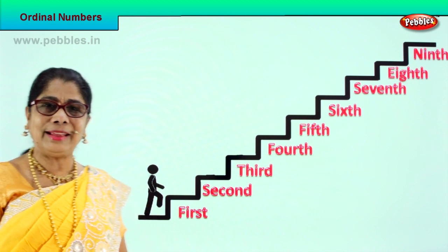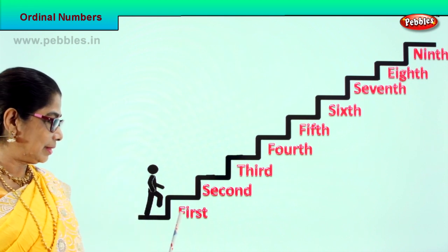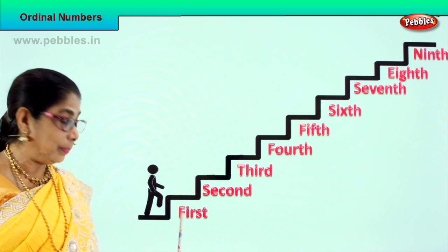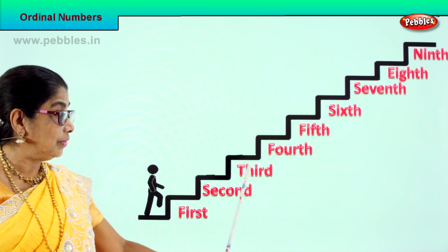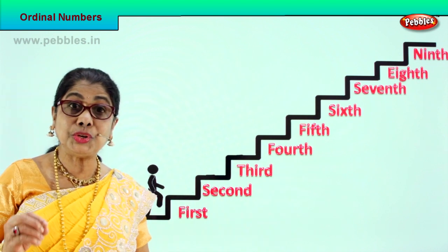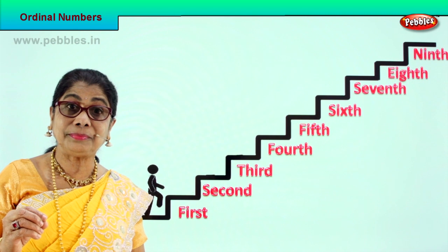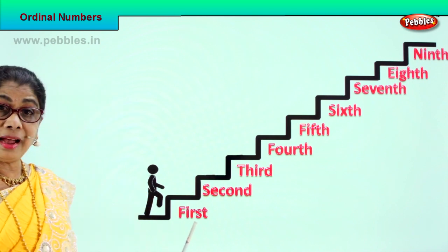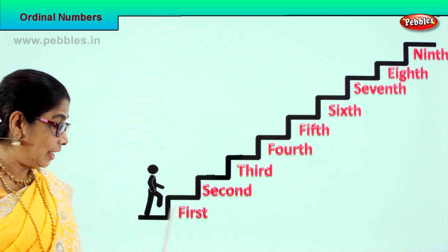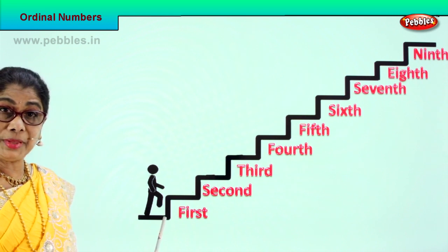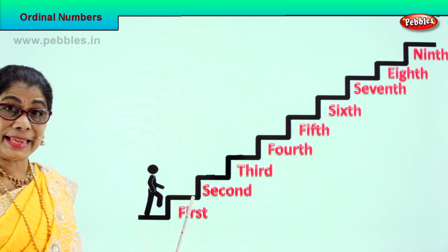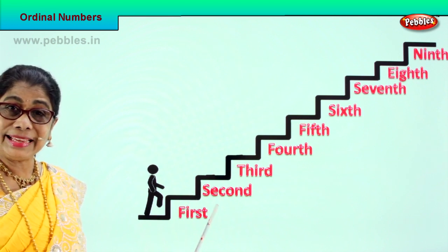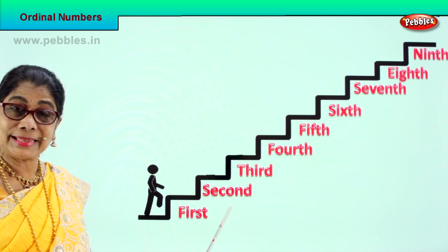This little one is standing on the first step. Spell this — it is the first step. How do you spell first? F-I-R-S-T. First. He is on the first step. Now he is going to climb to the second step. How do we spell second? S-E-C-O-N-D. Second.